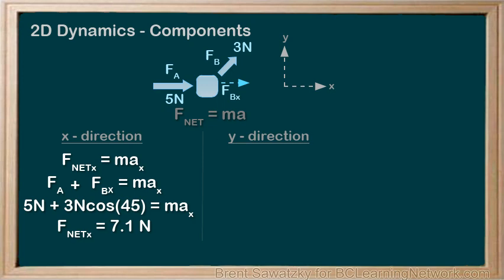Now, let's switch to the y-direction, or the y-component of F net. So, F net y, well, FA is only in the x-direction, so there's no component in the y. So we can skip that.